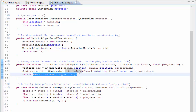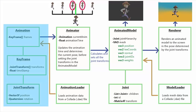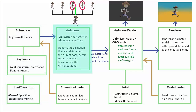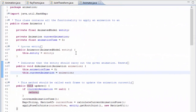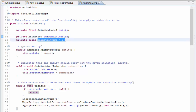That is everything in the animation data structure, so next we're going to move on to the animator class, which has the task of applying an animation to an animated model by going through the animation, calculating the current pose of the model, and setting the model's pose by setting those joint transforms in the joint class. The first part of this class is all very simple — the animator references the animated model that it's animating, it also has the current animation that it's applying to the model, and the current animation time, so that's how far through playing the animation it currently is.